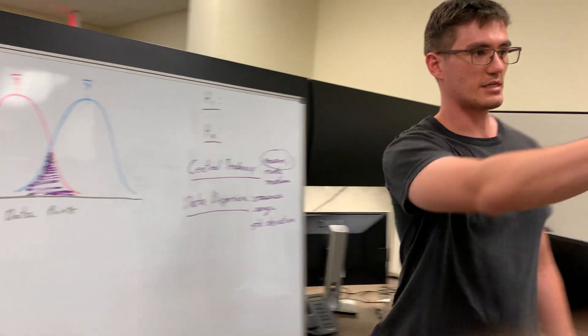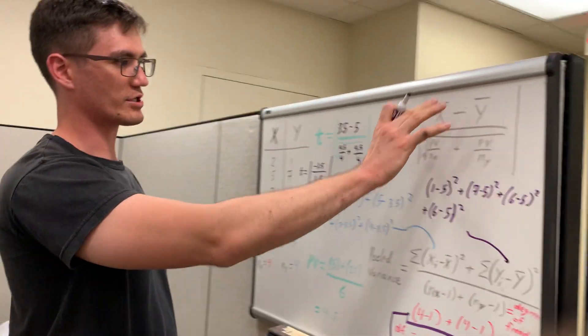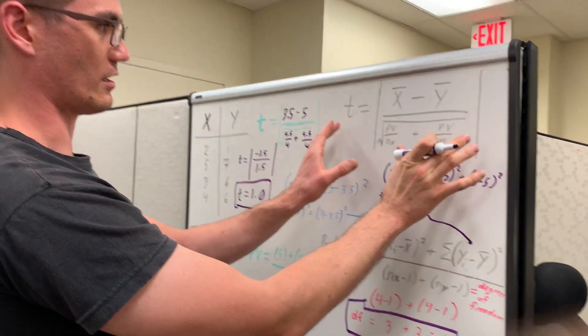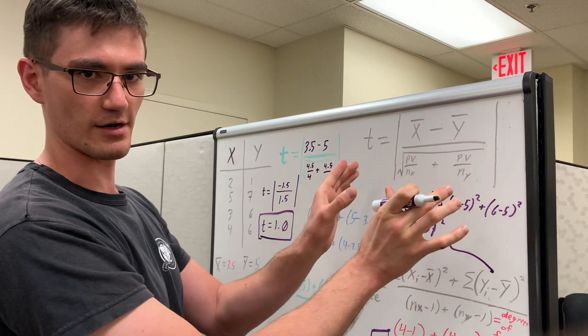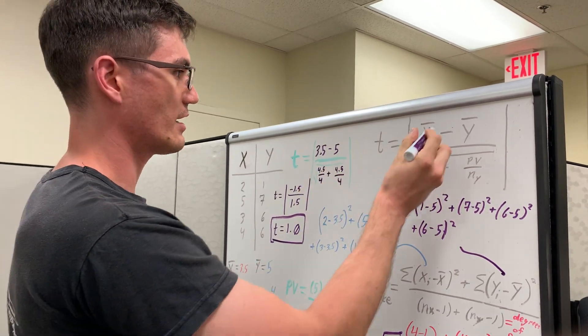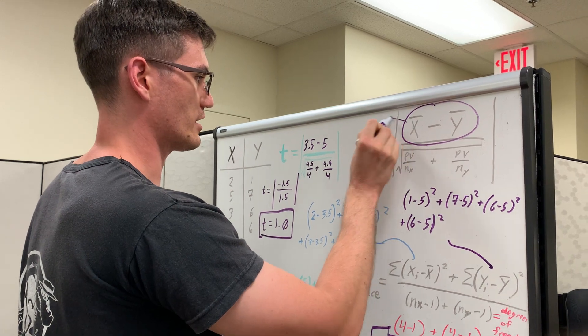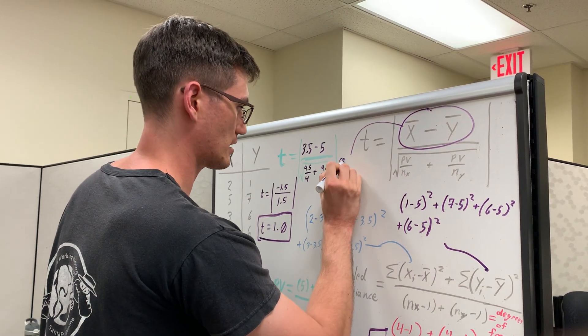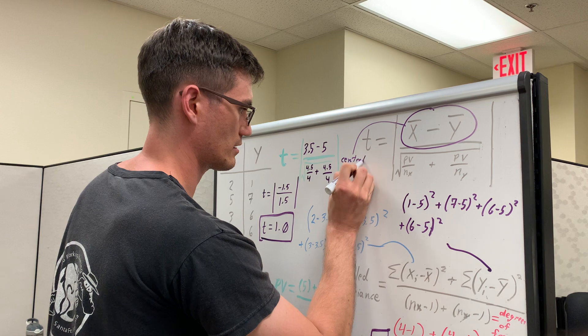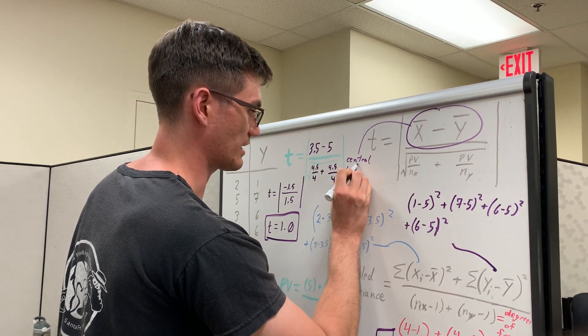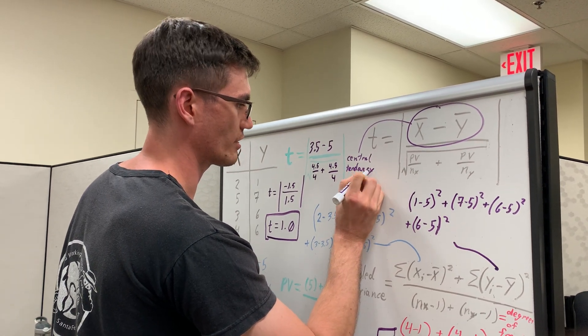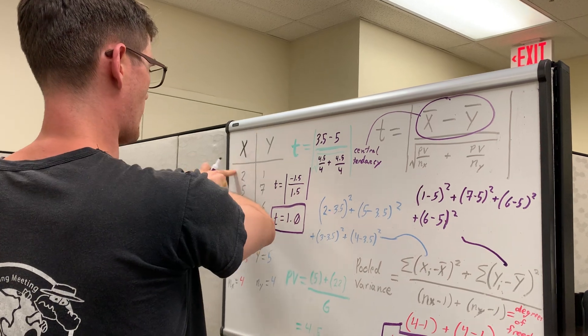So if we go back to our t-formula here, you can see which parts of this formula are measuring what type of data statistic. The numerator here, x-bar minus y-bar, is measuring central tendency. The difference in central tendency, rather, between treatments x and y.